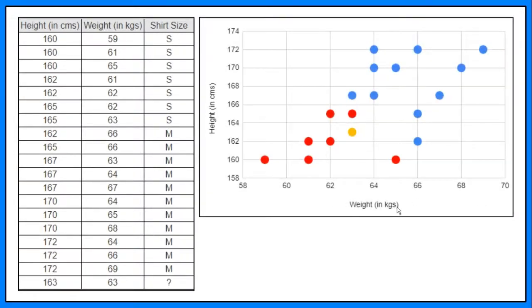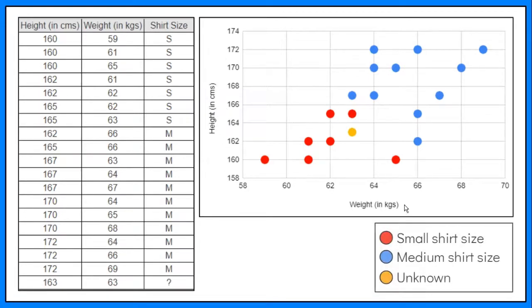The first feature is weight in kilograms and the second feature is height in centimeters. Based on the collected data, these red dots are the data points, weight and height, that represent the employees with small-sized shirts.